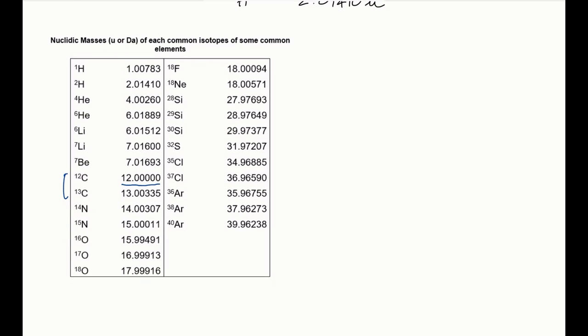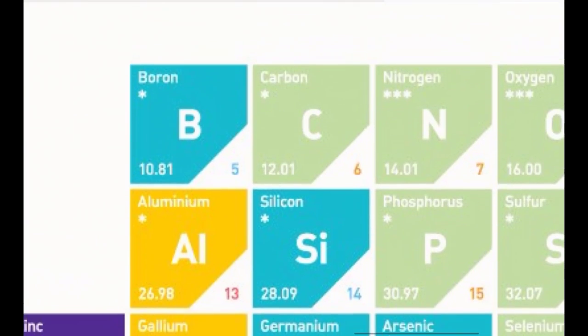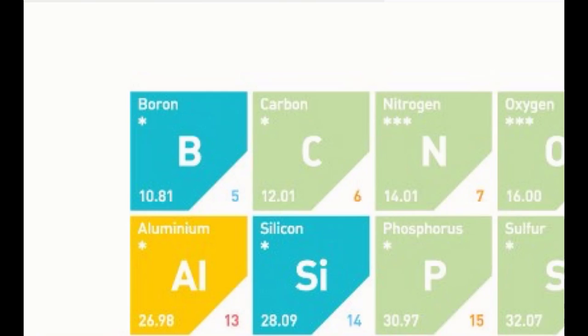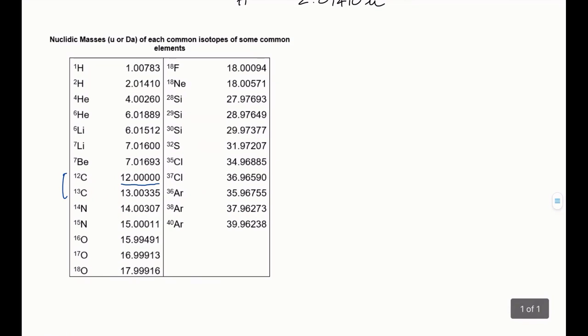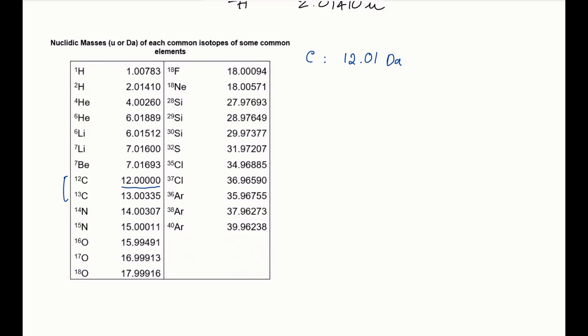Now, if you look at your periodic table, then below the symbol for each element, you usually find a small number with a few decimal points, and that is your average mass, or average atomic mass. So let's write a number down. You have carbon with an average mass of 12.01 Dalton. Now, how do you get that number?